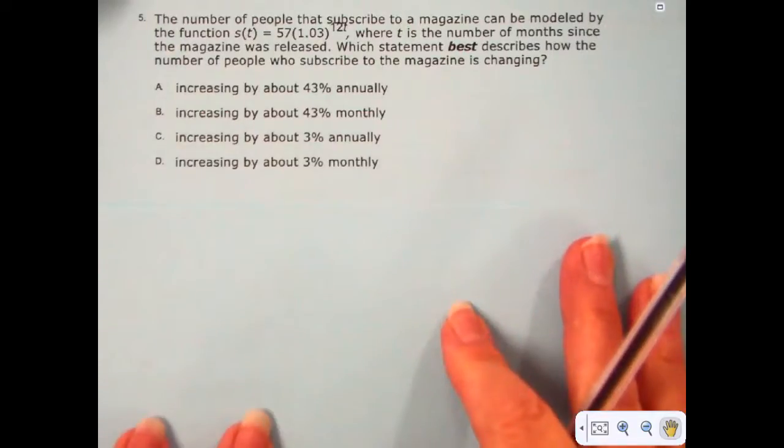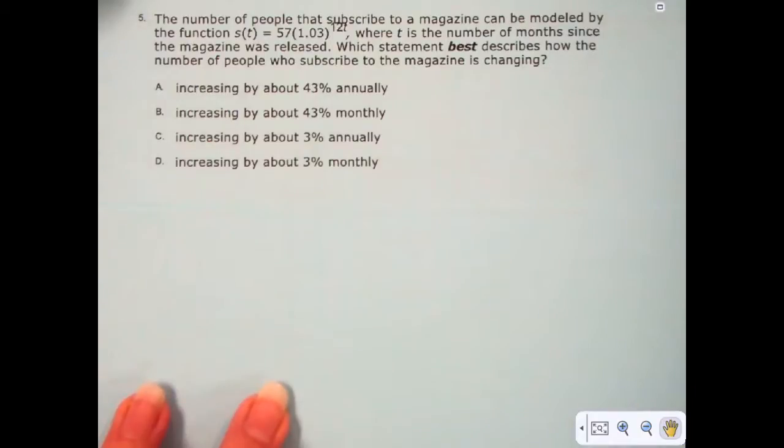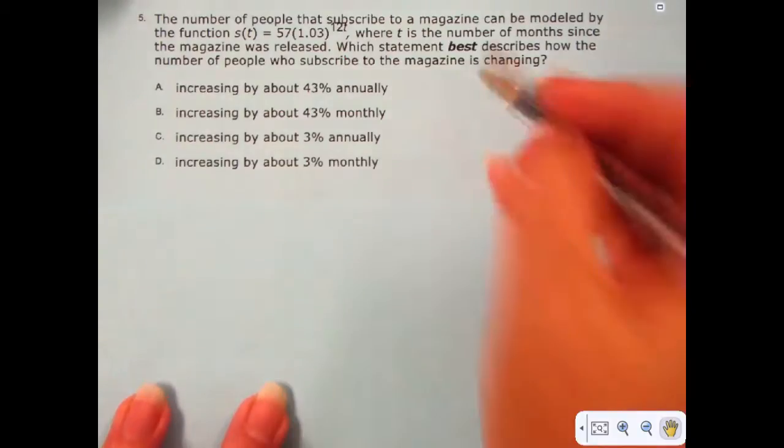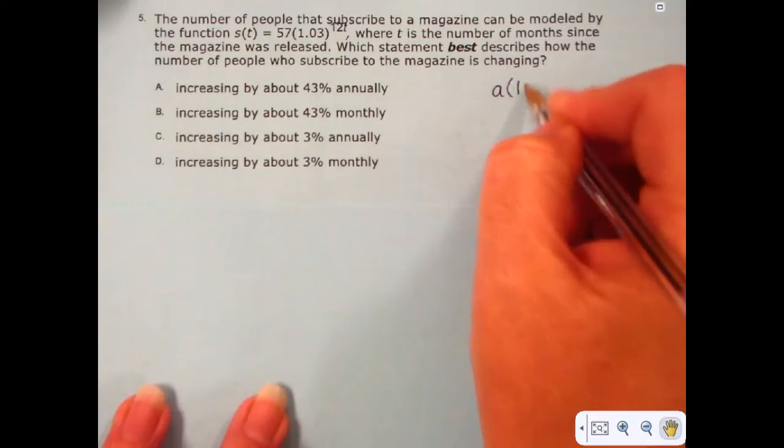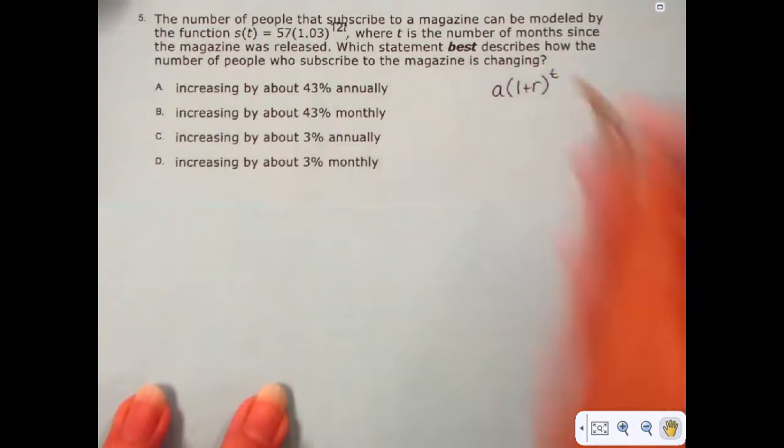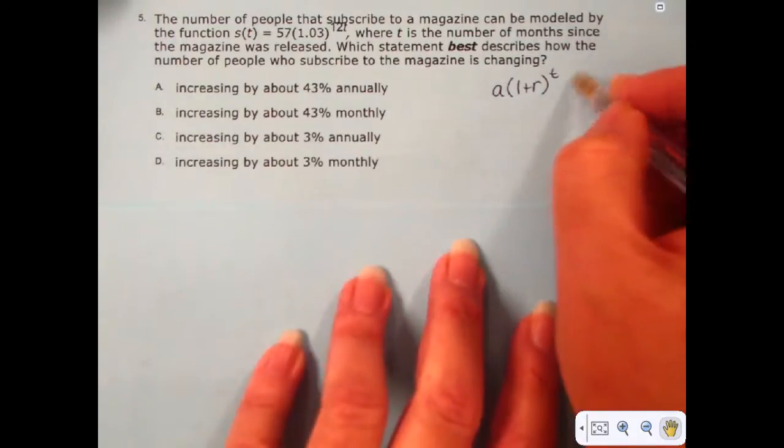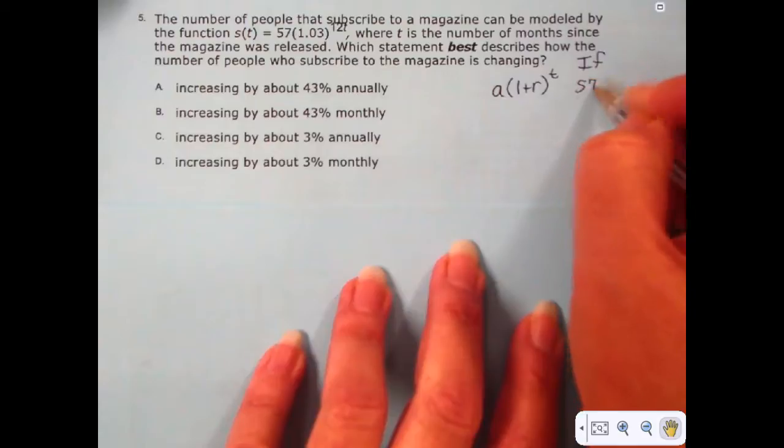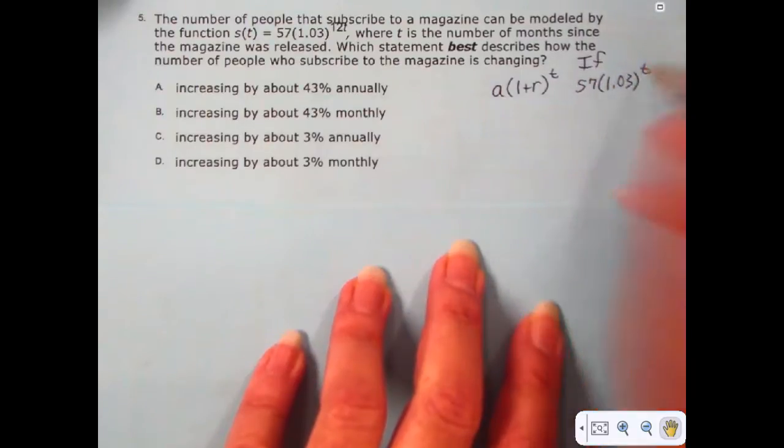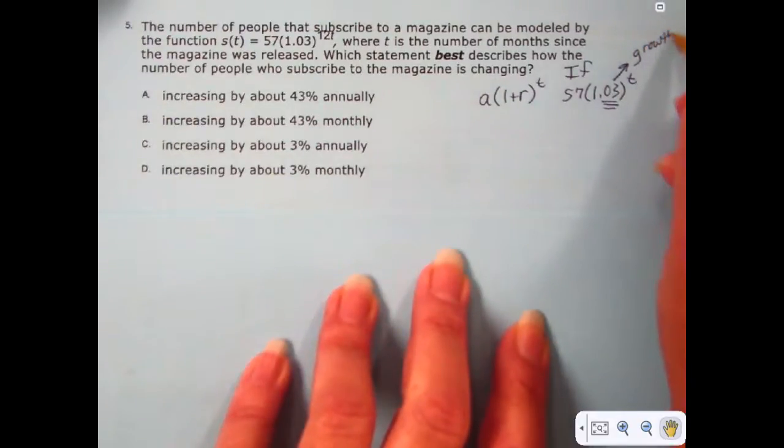Now, the information I want to give you about this problem is that you have a parent form for an exponential growth equation, and that would be when you have A times 1 plus R to the T power. If this particular problem was 57 times 1.03 to the T power, then the growth would be the 3% that we see here. This would be our growth of 3%.